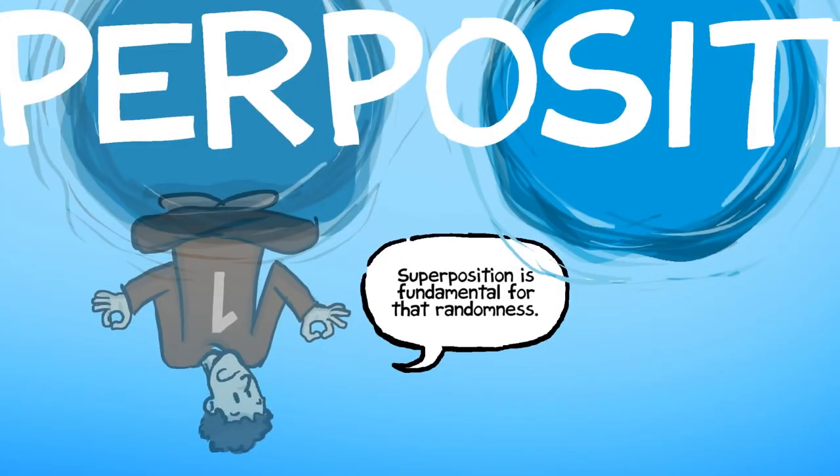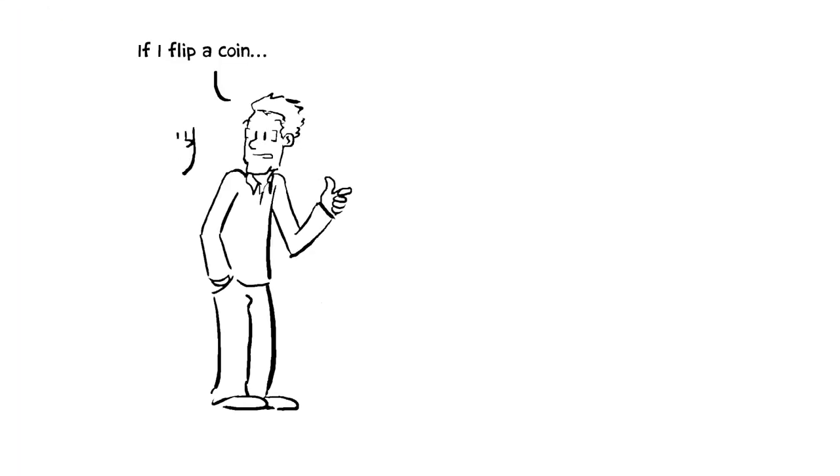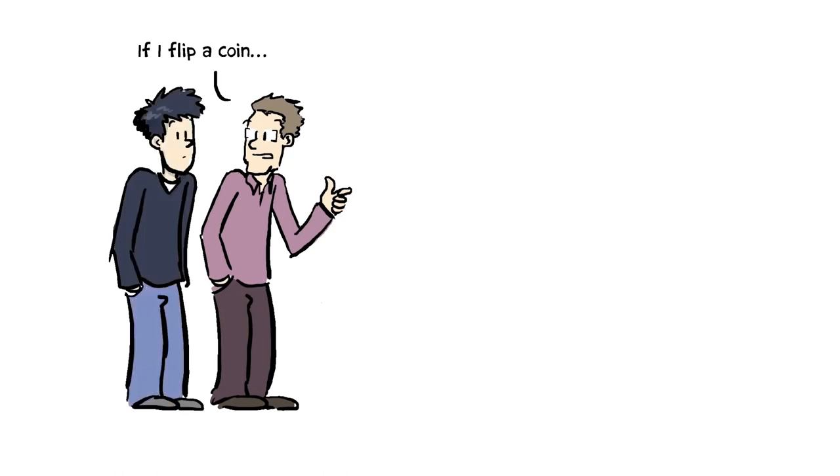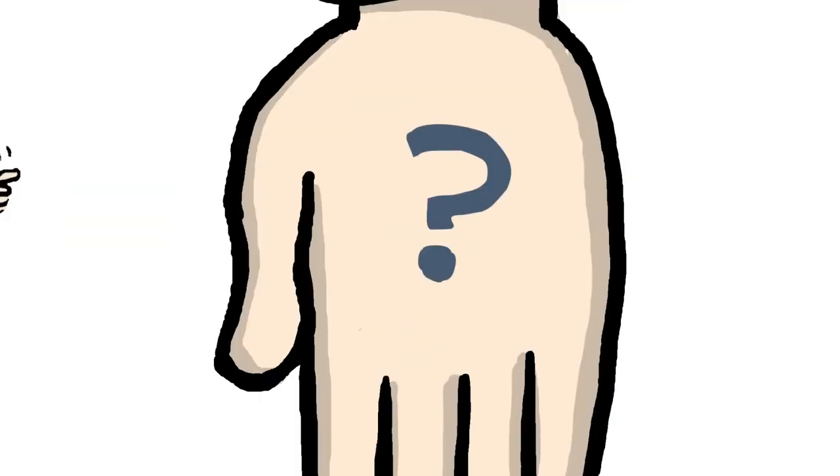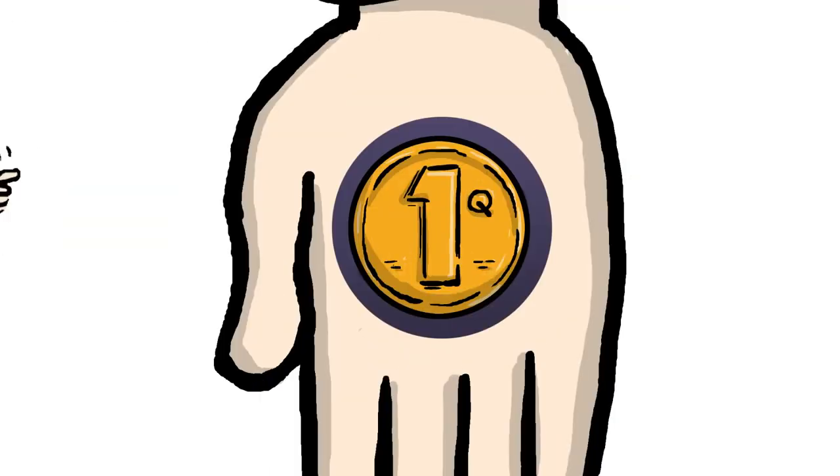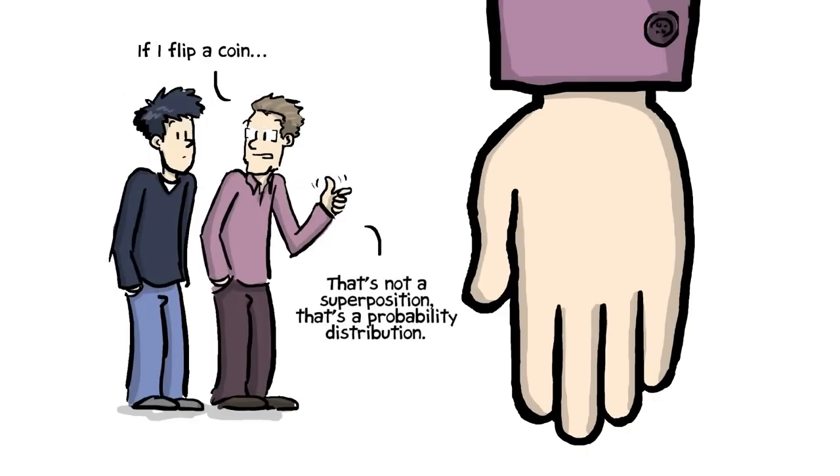So superposition is fundamental for that randomness. If I flip a coin, I don't carry coins in my pocket anymore, or I'd flip one. I flip a coin, and then I cover up the coin as soon as it lands. You don't know whether it's a heads or a tails, but it's either a heads or a tails. We just don't know yet. That's not a superposition.